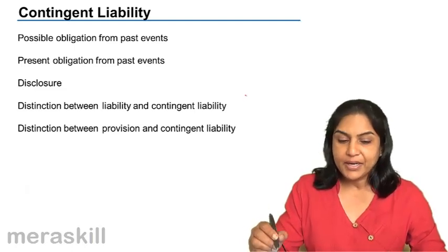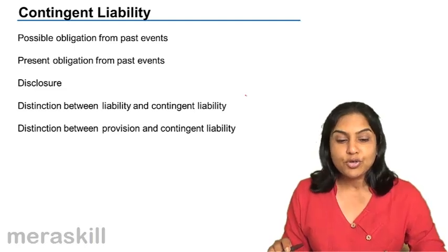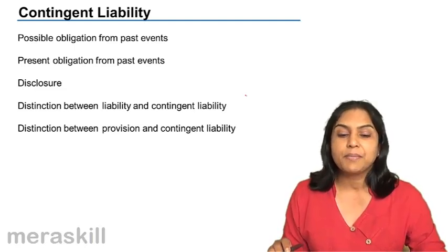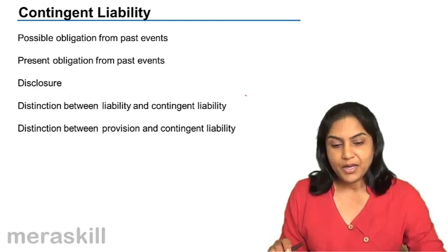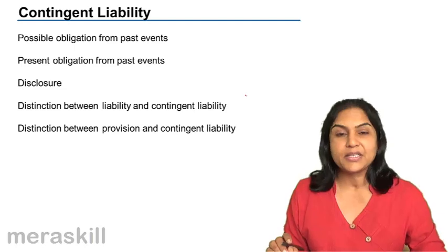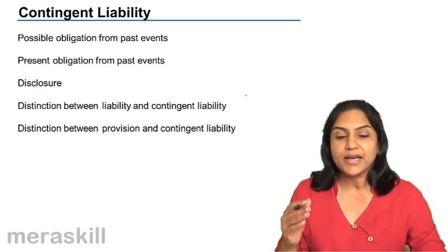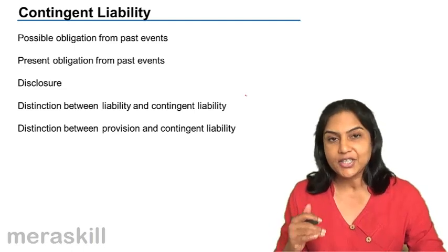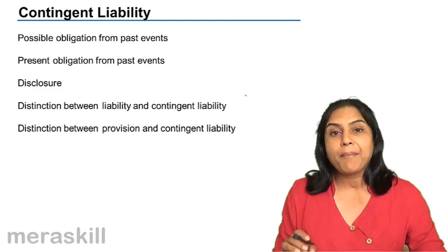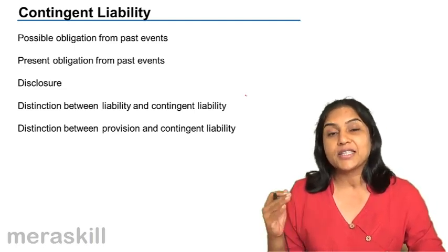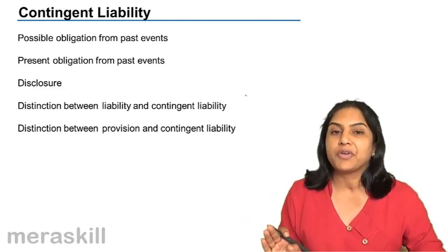What is a contingent liability? A contingent liability is a possible obligation from past events, or it could also be a present obligation from past events. Contingent liability is a liability from past events which may arise in the future on the happening or non-happening of an event.